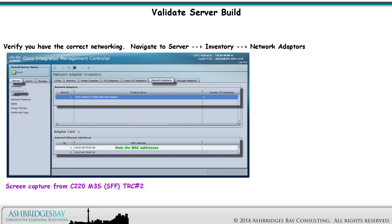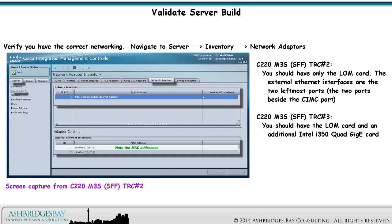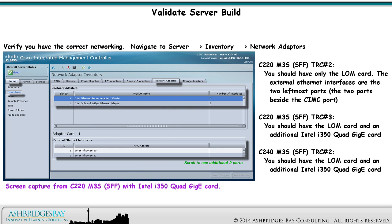Verify that you have the correct networking. Navigate to Server > Inventory > Network Adapters. For C220 M3S SFF TRC No. 2, you should have only the LOM card — the external Ethernet interfaces are the two leftmost ports, the two ports besides the CIMC port. For C220 M3S SFF TRC No. 3, you should have the LOM card and an additional Intel i350 Quad GigE card. For the BE7000 C240 M3S SFF TRC No. 2, you should also have the LOM card and an additional Intel i350 Quad GigE card. The MAC addresses of your Ethernet interfaces are displayed here, so they're easy to find.